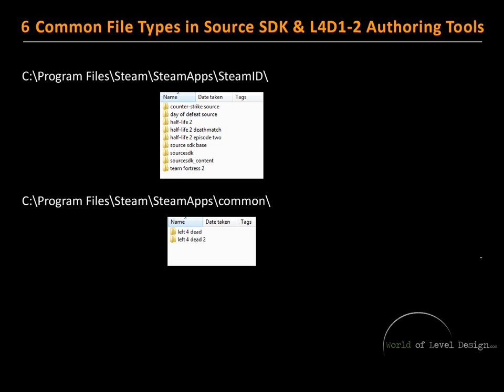Let me briefly cover the folder structure where your Steam is installed. By default it installs inside your Program Files C directory under Steam. For Source SDK, for games such as Counter-Strike, Day of Defeat, and Half-Life 2, you will find all these folders including the Source SDK folder inside Steam Apps and your Steam ID.